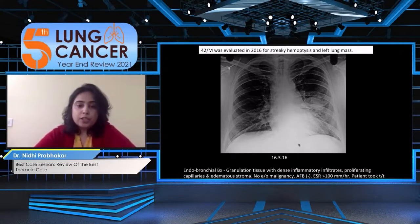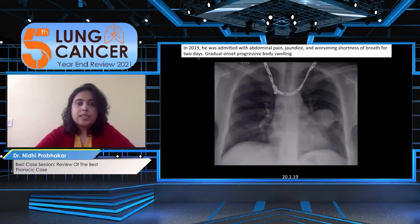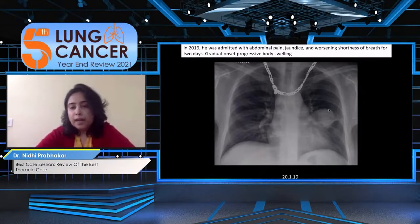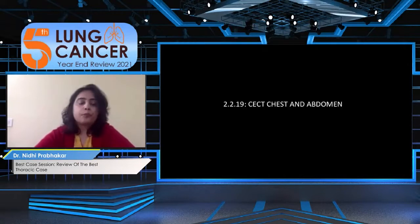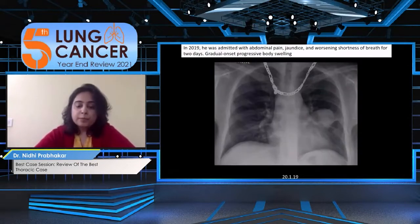When the patient came to us in 2019, the chest X-ray showed the mass with the rest of the lungs clear. The lung lesion had marginally increased by approximately one centimeter over three years. The patient's primary complaints were abdominal pain, jaundice, shortness of breath for the last two days, and progressive body swelling.